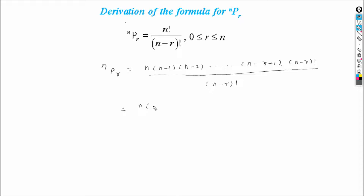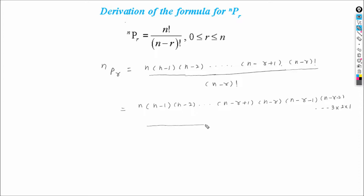This is equal to n into n minus 1 into n minus 2 into ... into n minus r plus 1, and by using the definition of n factorial, it will be multiplied by n minus r into n minus r minus 1 into n minus r minus 2 into ... into 3 into 2 into 1, all over n minus r factorial. If we observe the numerator, that is n into n minus 1 into n minus 2 into ... into 3 into 2 into 1, the numerator is nothing but the expansion of n factorial.